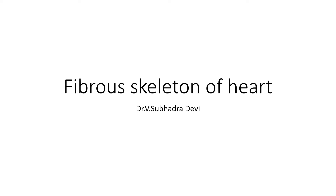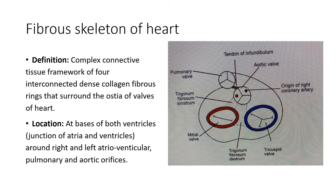Let us have a quick review about the fibrous skeleton of the heart. What do you mean by fibrous skeleton of the heart? It is a complex connective tissue framework of four interconnected dense collagenous fibrous rings that surround the ostia of the valves of the heart. Those four valves are the tricuspid valve, the mitral valve, the aortic valve, and the pulmonary valve. The connective tissue framework surrounds these four ostia and is interconnected by collagenous fibrous rings.